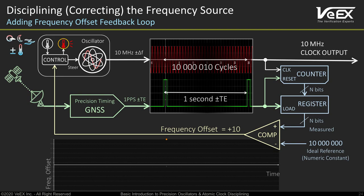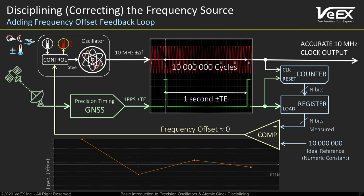Now we can count how many cycles there are in one second — that is the definition of frequency. The reading from the frequency counter gets compared to the expected ideal value, in this case exactly 10 million cycles. If the oscillator is producing 10,000,010 cycles per second, we can see that the error is plus 10 — it is running too fast. This error value gets fed to the oscillator control system, which applies a proportional correction to slow it down. The oscillator lowers its frequency but is over-corrected, giving a minus 1 Hz error. This new reading gets fed back to the control system, which instructs the oscillator to increase its frequency a little bit.